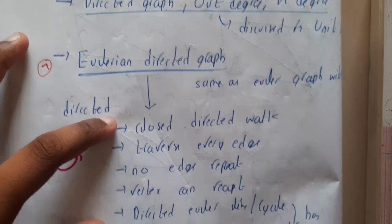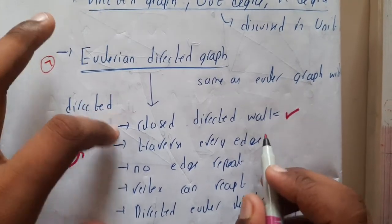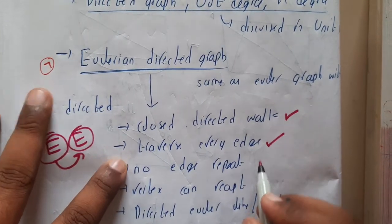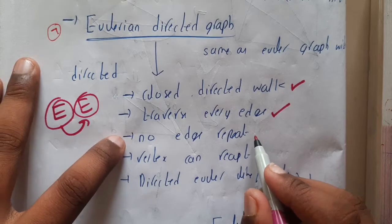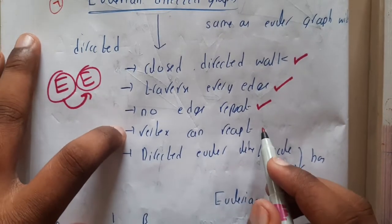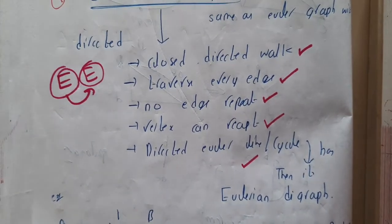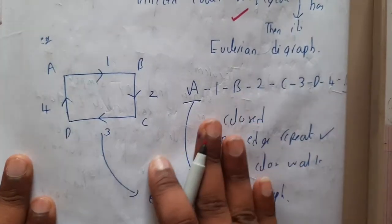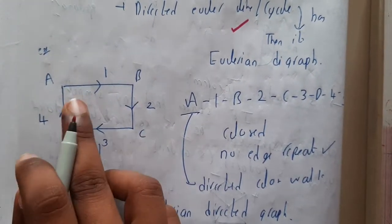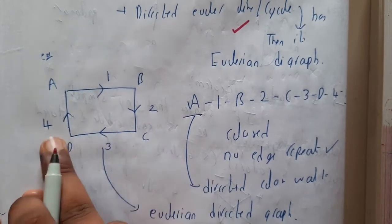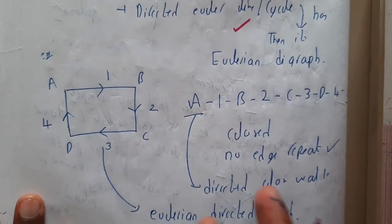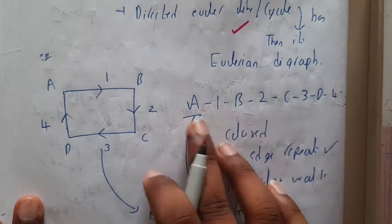Let me write the conditions here. It should be a closed walk, it should traverse every edge, there is no repetition of edges. Vertices can repeat. Directed Euler cycle should be there to solve it. If you take a small example, it is nothing but A, B, C, D. If you go in the exact path, it is closed, no edge repeated.